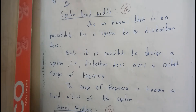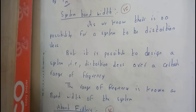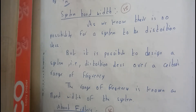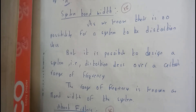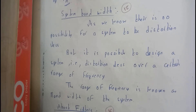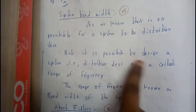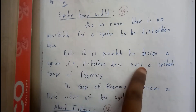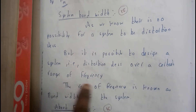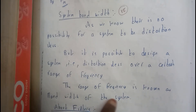So every system has some distortion level. As we discussed previously with efficiency — no system is 100% efficient. If you give a certain amount of energy, it will not return that same amount; there will be some losses in the form of noise or otherwise. However, it is possible to design a system that is distortion-less over a certain range of frequency, and that range of frequency is known as the bandwidth of a system.